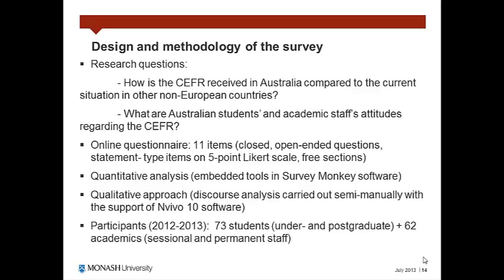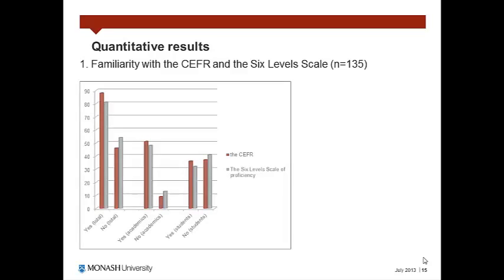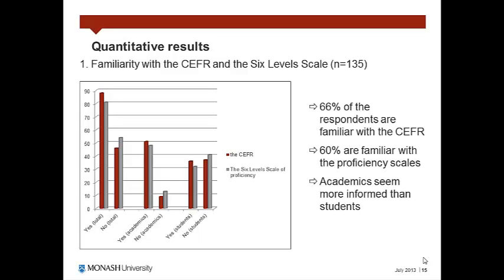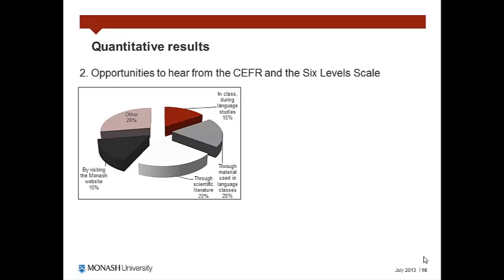Overall, 135 respondents contributed to this survey. I will now comment briefly on the main quantitative findings illustrated by the following graphs, which summarize answers for the 11 questions. For the first three questions, among the 73 students and the 62 staff who participated in the online survey, 66% declared that they were familiar with the CFR, while 60% also claimed to be aware of the common reference levels from A1 for basic user to C2 for proficient user. Overall, it seems that academics were more informed than students. We asked them how they heard about the CFR and the six-level scale, and most of them selected the category of scientific literature and material used in class, which means that they had more opportunities to become familiar with the framework mainly during research activity and by professional practice.